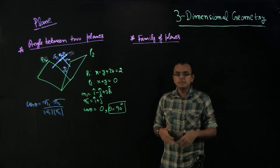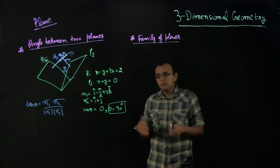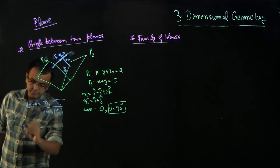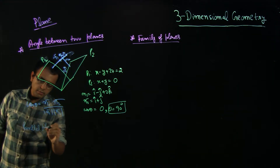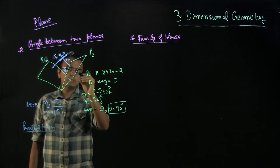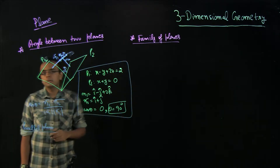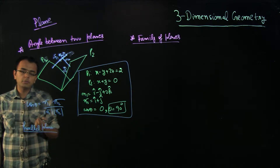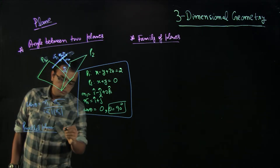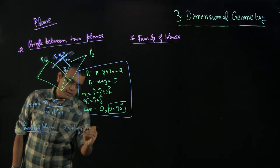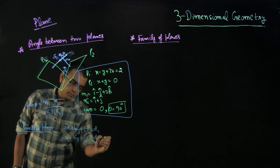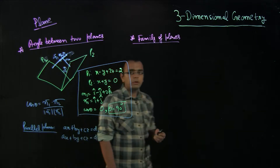While we are on the topic of perpendicular planes, let us also discuss parallel planes. For perpendicular planes, the dot product of the normals will be 0. If you have parallel planes, cos theta should be 1, meaning N1 and N2 should essentially be the same. You can imagine that two parallel planes would have parallel normals — this should be pretty obvious to understand.